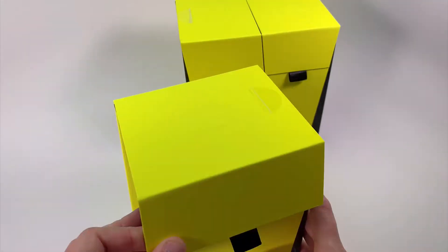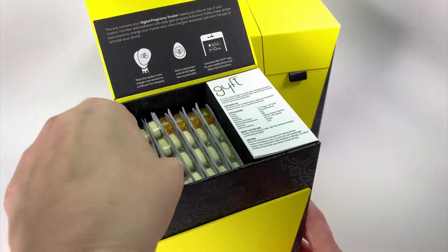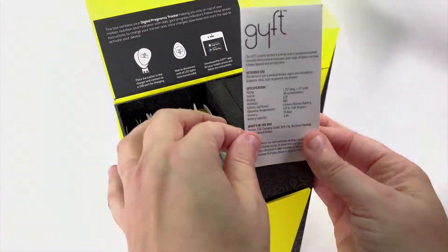Inside the T3 section for the third trimester, you will find the pre-packaged vitamins and the smart pendant along with its accessories.